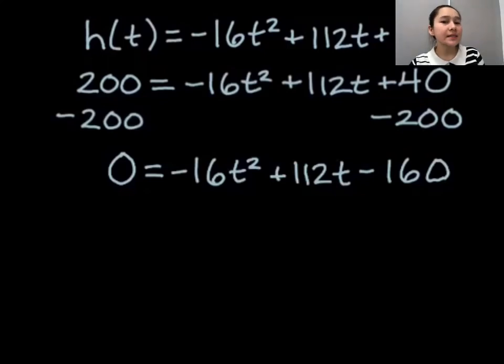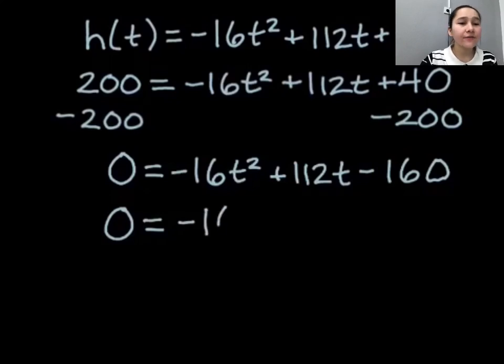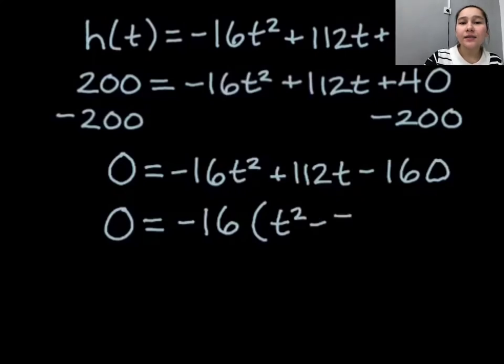Now I don't know about you but I'm not really keen on trying to factor this the way it is right now. These numbers are pretty big and it's gonna be difficult to try to do it. So the first thing I want to do is take out the greatest common factor. If I can factor out some of the numbers to make them smaller, it's gonna be a lot easier for me and for you guys. And in this example the greatest common factor is actually negative 16. So if I factor that out, this quadratic becomes a lot nicer to deal with. Doing that I'm gonna get t squared minus 7t plus 10.